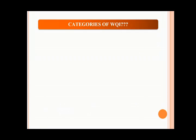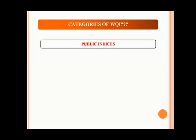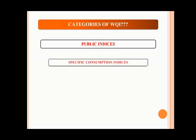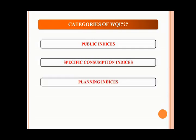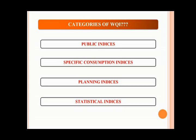There are various categories of WQI. The public indices are used for general water quality analysis without taking into account the type of consumption. The specific consumption indices take into consideration the type of water consumption or application. The planning indices contribute towards planning water quality management and helps in administrative decision-making. The statistical indices are based on statistical methods and are devoid of subjective contributions like expert opinion.